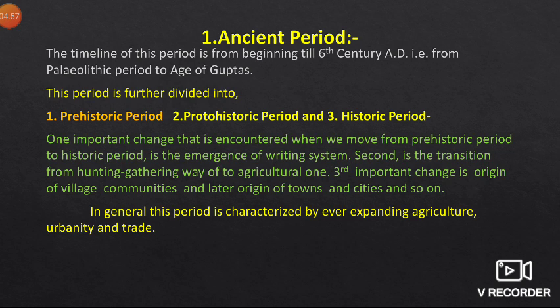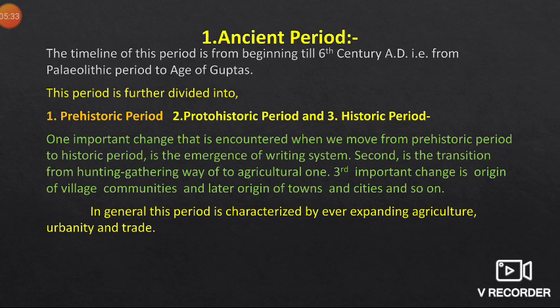The first one we take up is the Ancient period. The timeline of this period is from the beginning — that is from the Paleolithic culture, which is the first culture from where we begin the study of Indian history — till the Gupta period, that is till the 6th century AD. This Ancient period of Indian history is further divided into sub-periods: the prehistoric period, the protohistoric period, and the proper historic period.